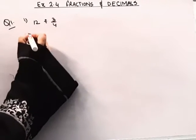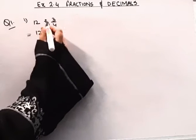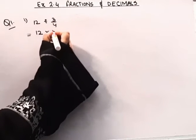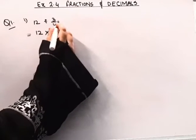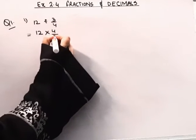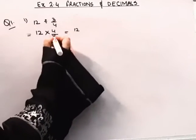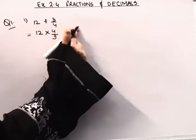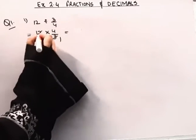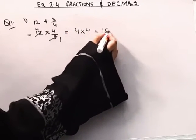So this is the first part. We will change this division to multiplication and it will be reciprocal. 3 by 4 reciprocal — numerator will change to denominator and denominator will become numerator — so this will become 4 upon 3. 12 and 3: they both have 3 as a common factor. 3 fours are 12, so this is 4 into 4, which is equal to 16.